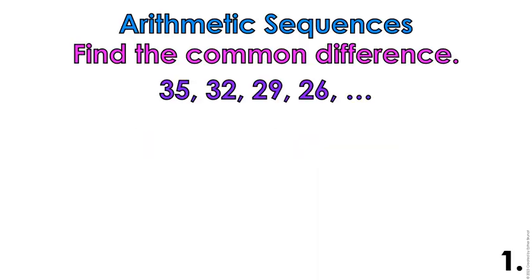So the first four examples — find the common difference. For 35, 32, 29, 26: I'm going to take 32 minus 35, 29 minus 32, and 26 minus 29. I get d equals negative 3, so that's my common difference, because it was constant — the same for every two successive numbers right next to each other.